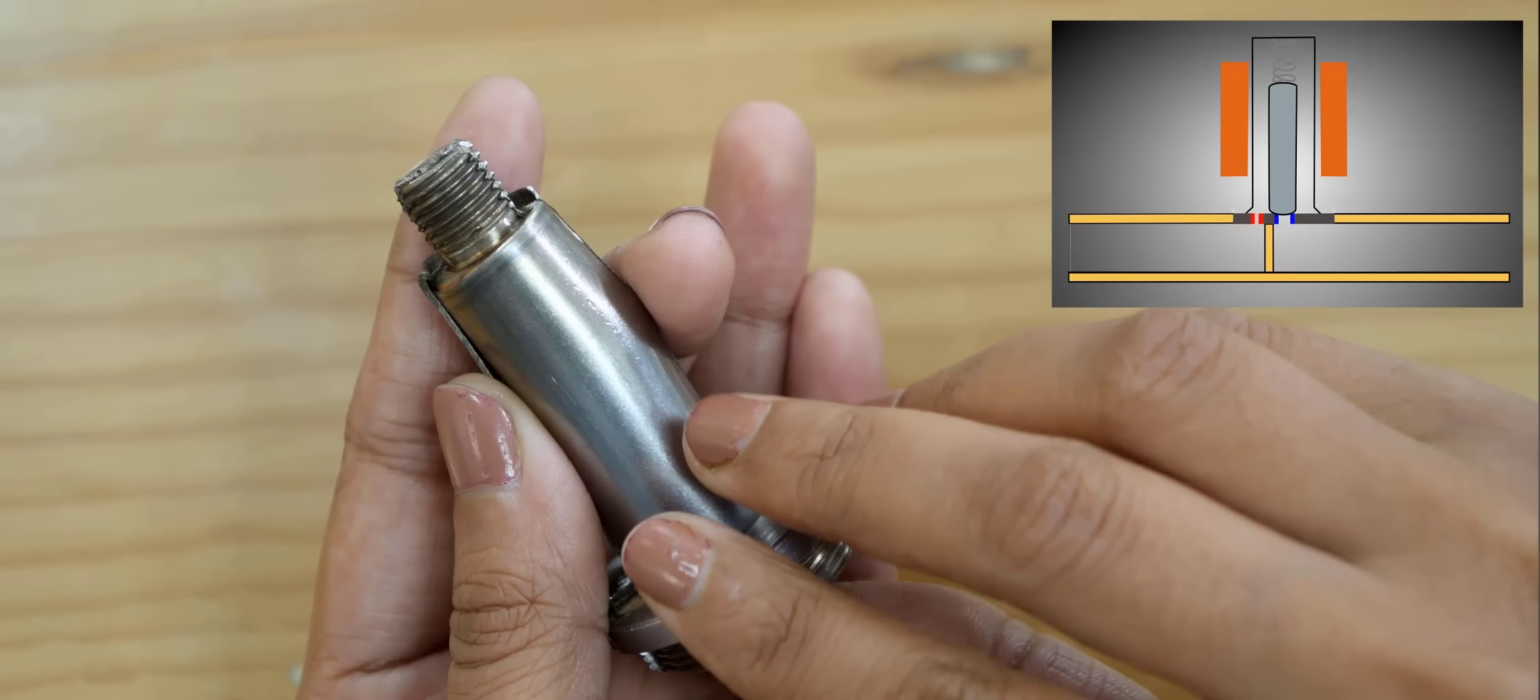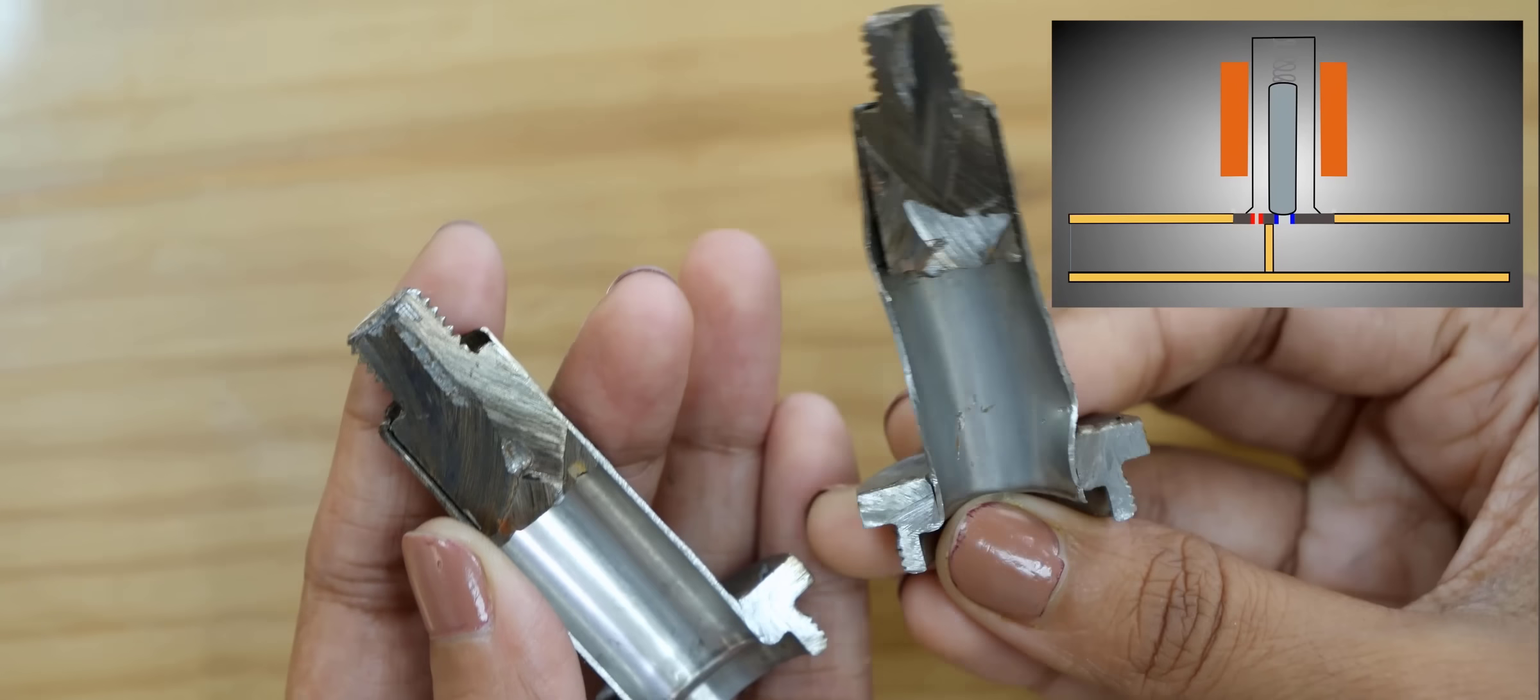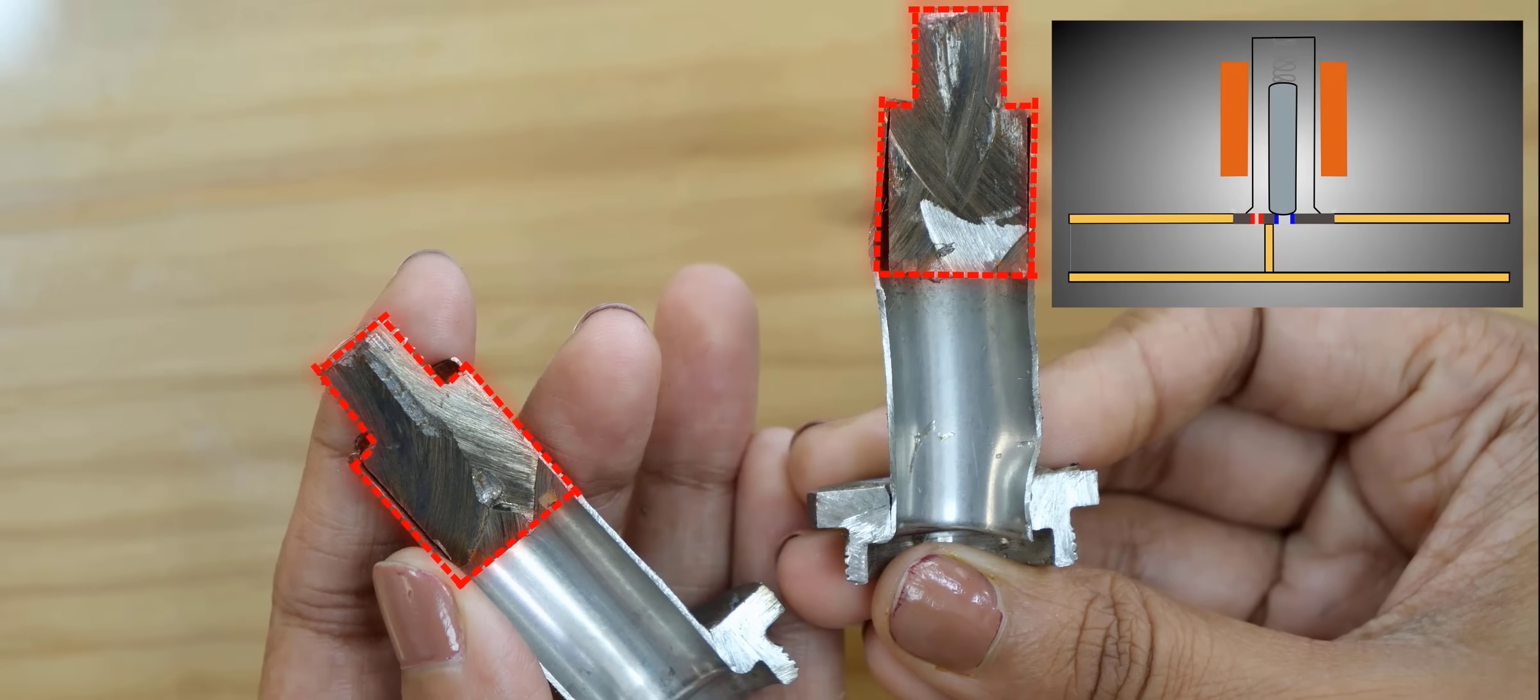However, if you tear down a real 2x2 valve, you can see an additional component. An iron cap at the top of the cover. Why is it needed?